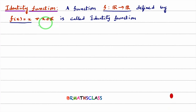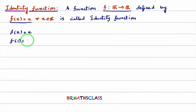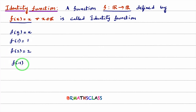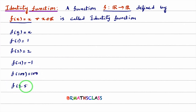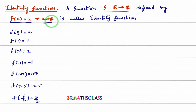You can take x as any real number. For example, f(x) is defined as x. So f(1) is 1, f(2) is 2, f(-1) is -1, f(100) is 100, f(2.5) is 2.5, and f(3/2) is 3/2. For any x belonging to R, f(x) is defined as x.